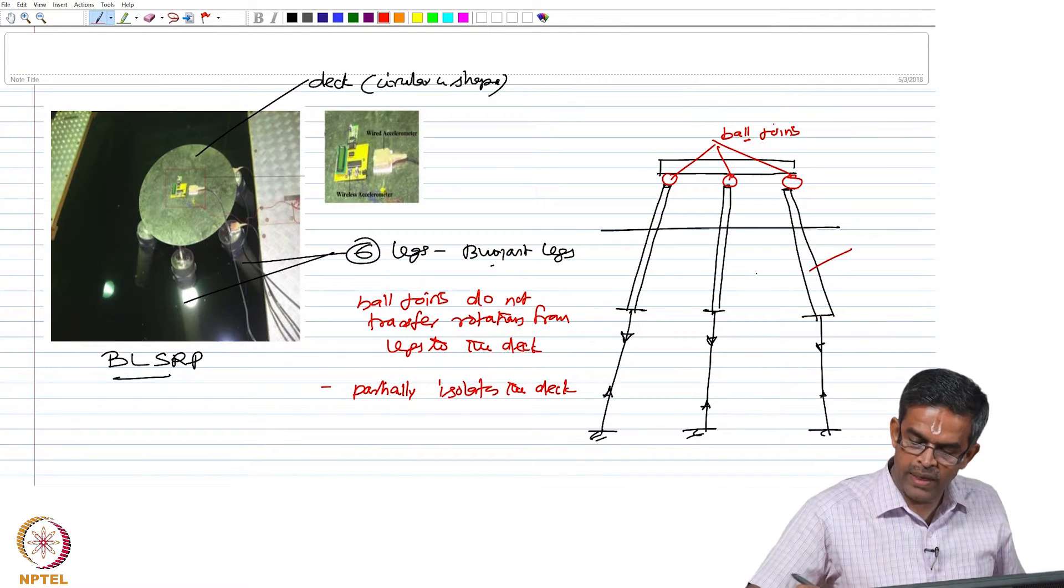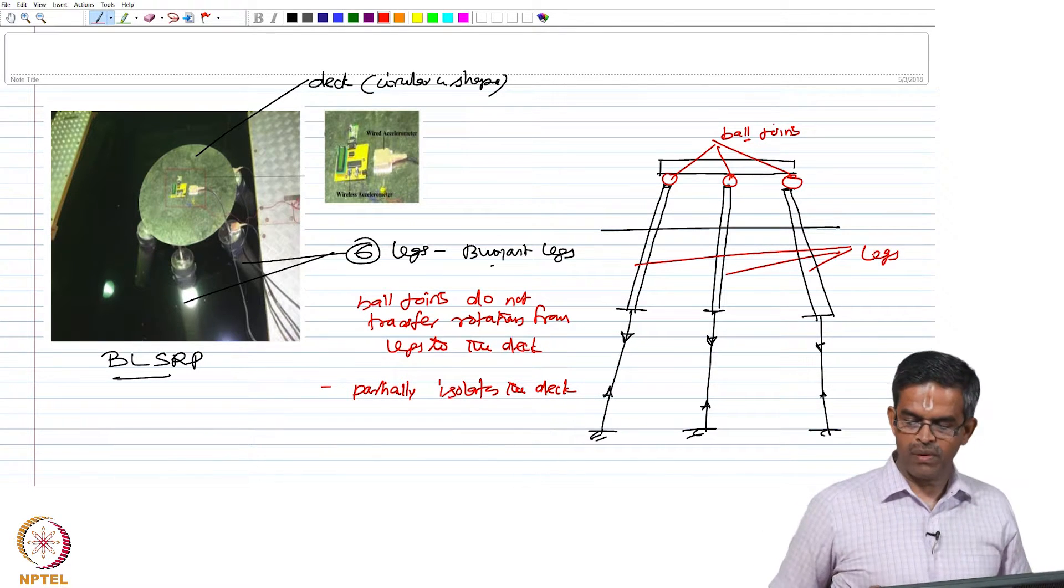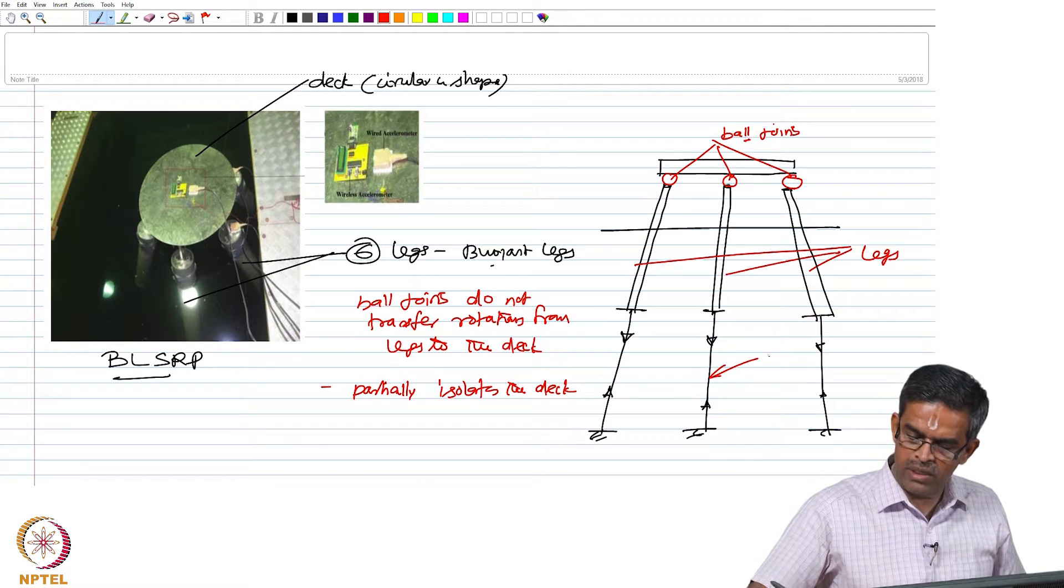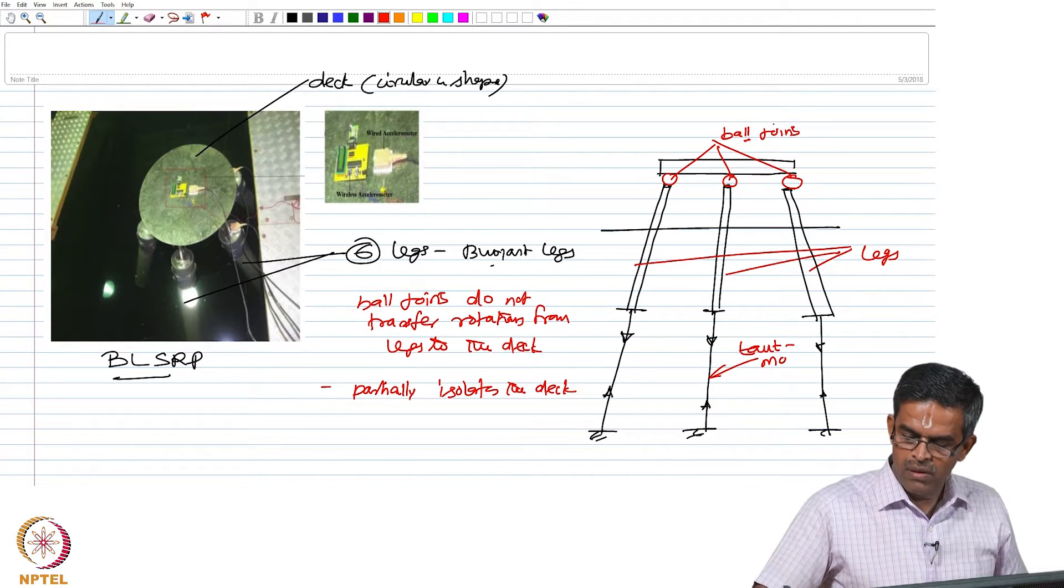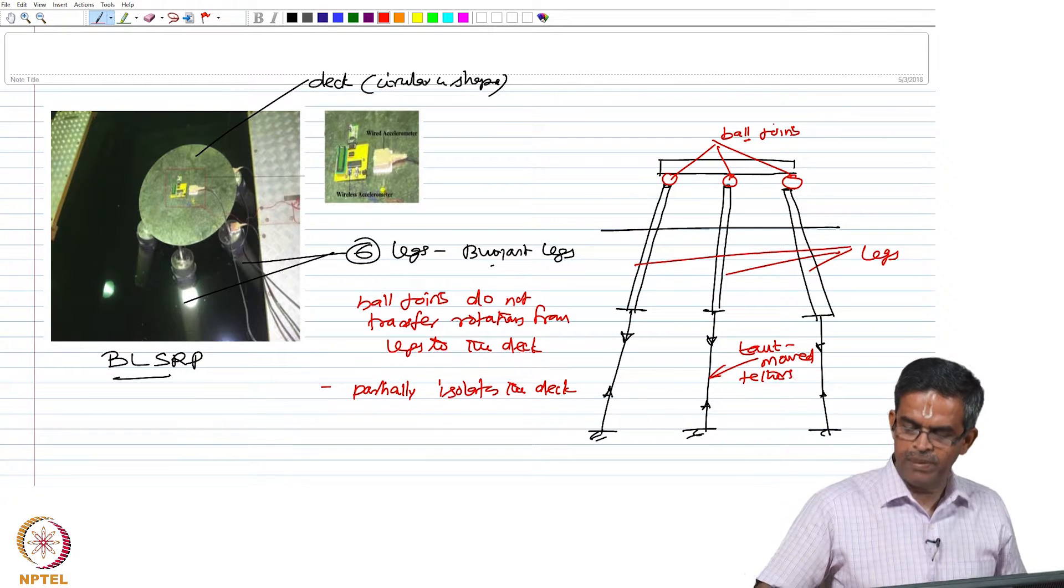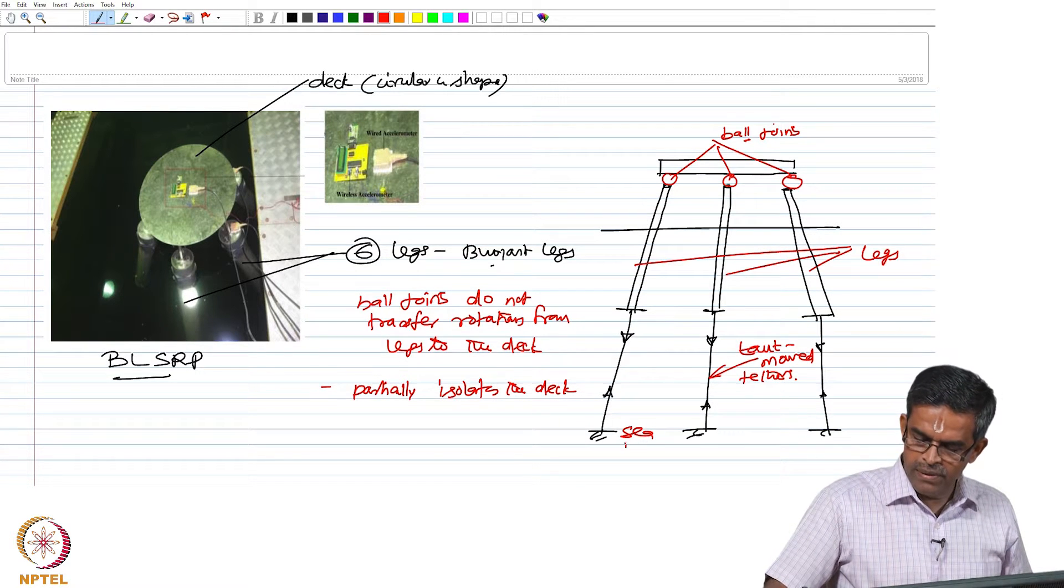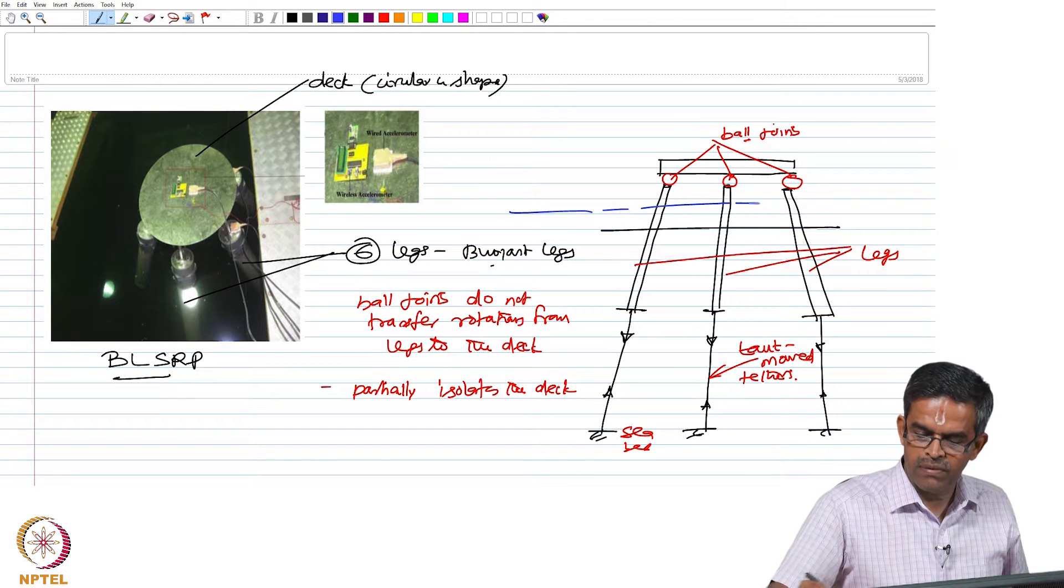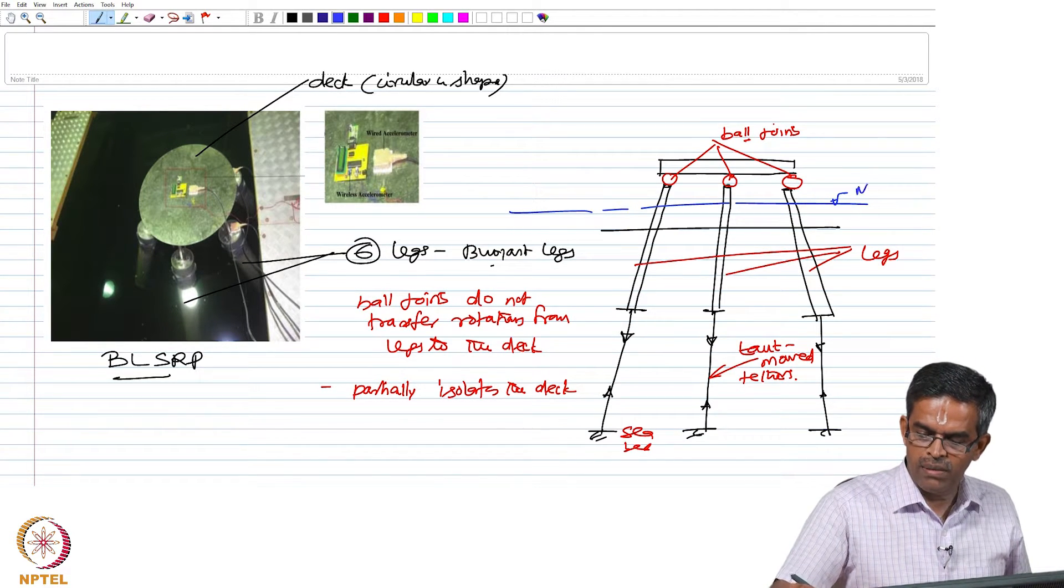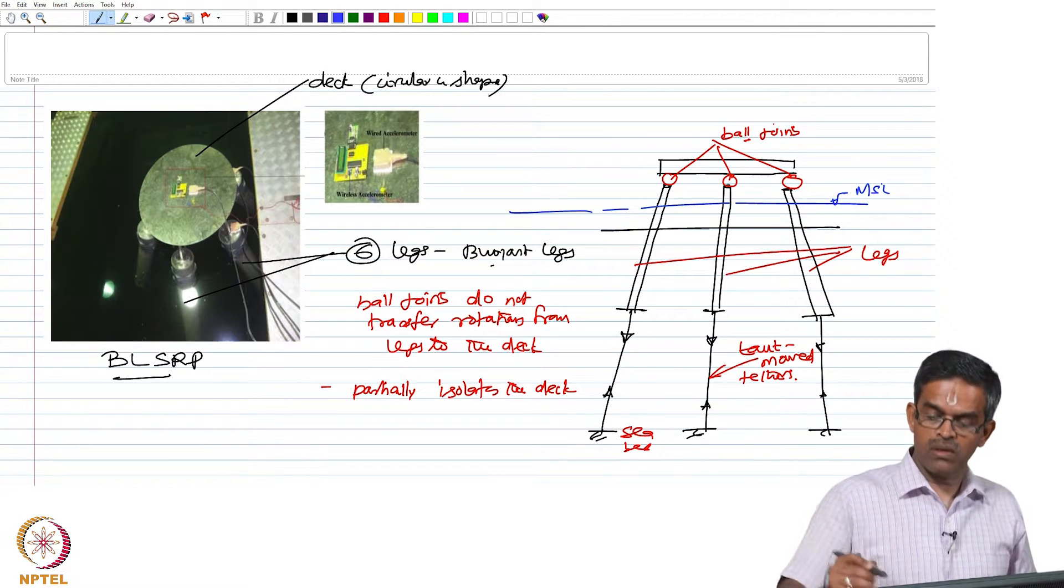These are the buoyant legs, these are taut moored tethers, meaning they have high initial pretension, and this is the seabed in the model. This is the water level, which is the mean sea level, and the deck is much above water.